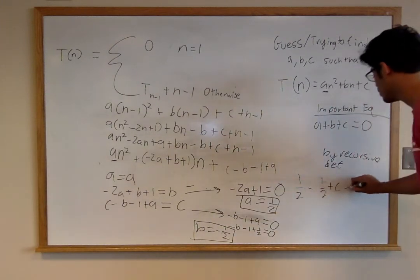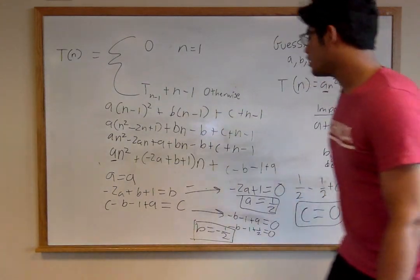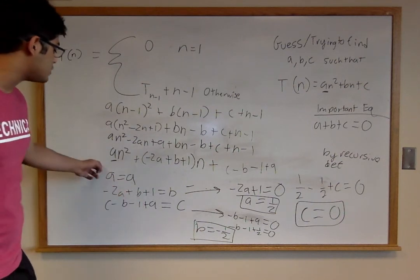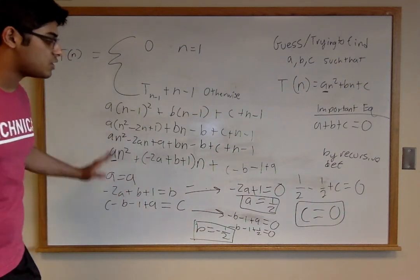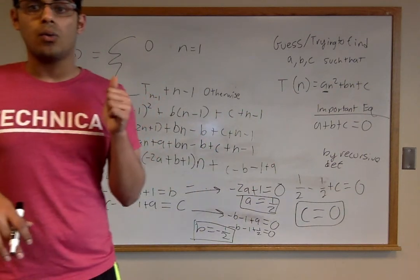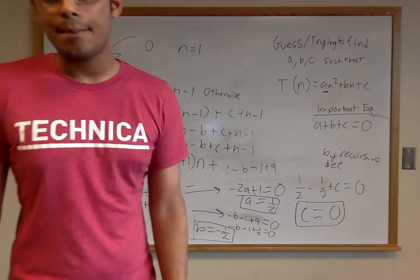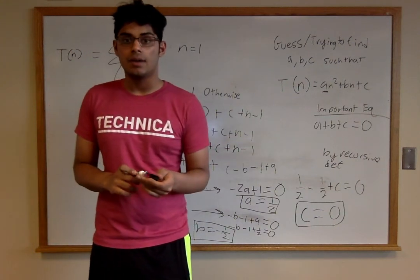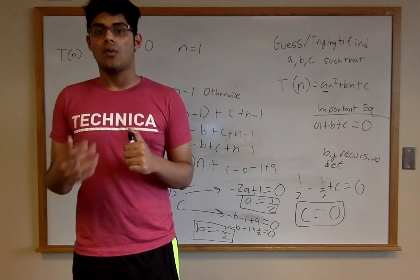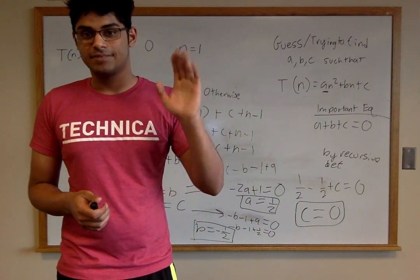Now for c — this is where that important equation from the inductive base becomes helpful. We plug a = 1/2 and b = -1/2 into a + b + c = 0, giving 1/2 - 1/2 + c = 0, so c = 0. We've now found all three constants using constructive induction. We can plug them back into our original guess and the problem is solved. Let me know if you have any questions — feel free to reply or bring a problem to Wednesday's final review.